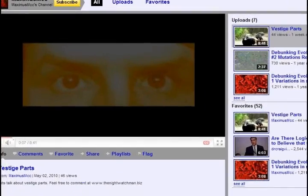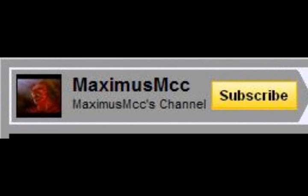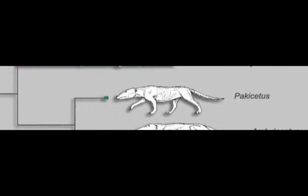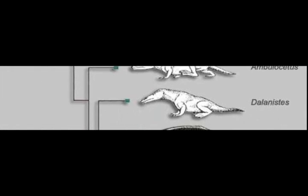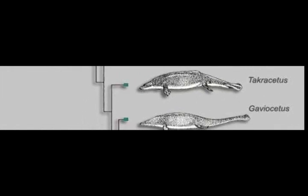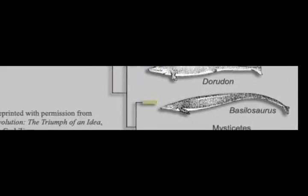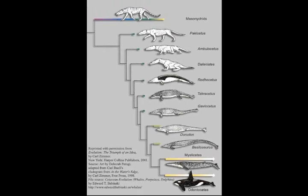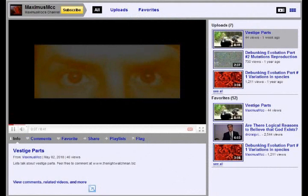YouTube Christian apologist Max, otherwise known as Maximus MCC on his channel, has created a video to discuss something known as vestigial parts. Vestigial parts in biological organisms are features — these can be anatomical structures, behaviors, and biochemical pathways — which have lost all or most of their original function in a species through evolution. What our friend Max wants to know is: do vestigial parts really exist, and how do we identify them?